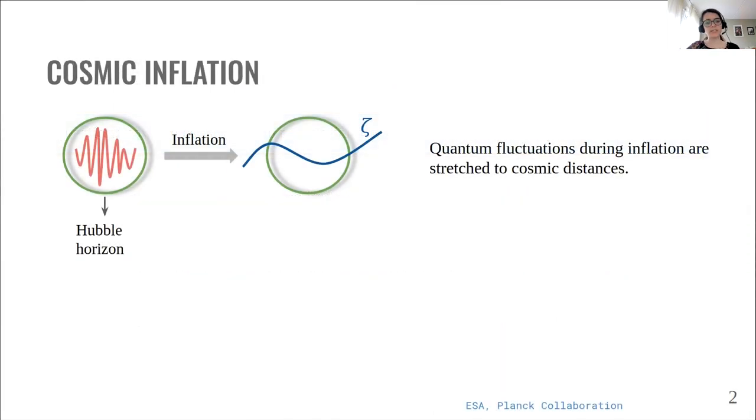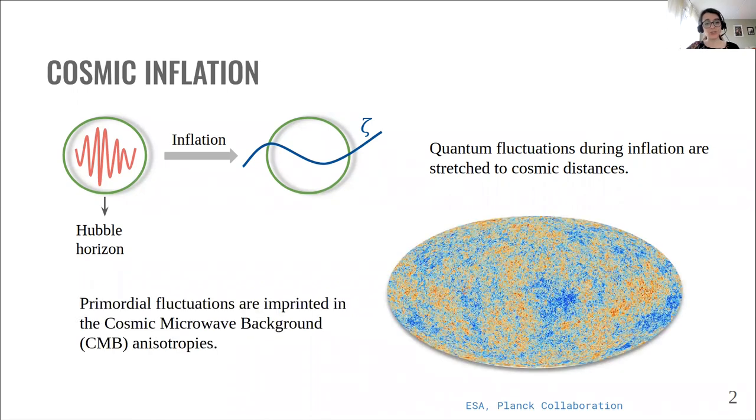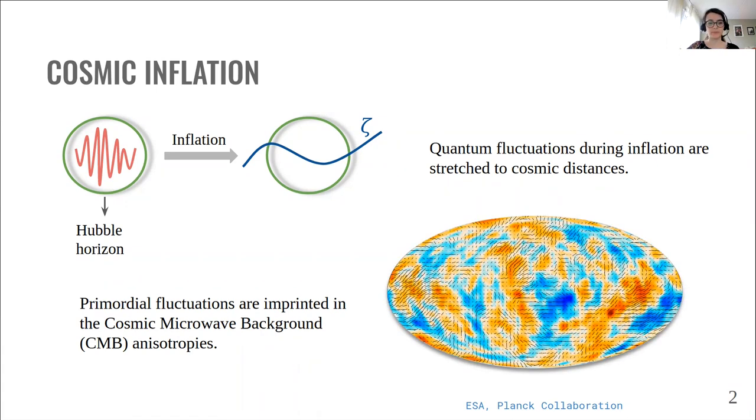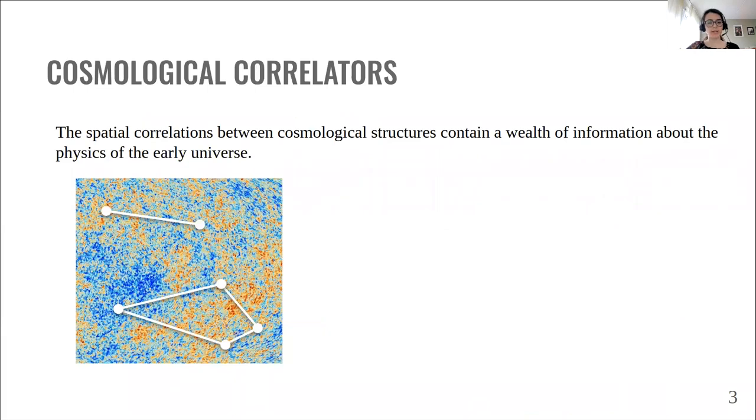Currently, cosmic inflation is the main paradigm that explains the generation of primordial curvature fluctuations. As the universe expands, quantum fluctuations in the inflaton field are stretched to cosmic scales, inducing curvature perturbations. These are the seeds of the large-scale structures we observe today. An important window that we have into the early universe is the CMB radiation, whose anisotropies in temperature and polarization reflect the primordial ones. The spatial correlations between anisotropies provide crucial information about what happened in the first moments of our universe.